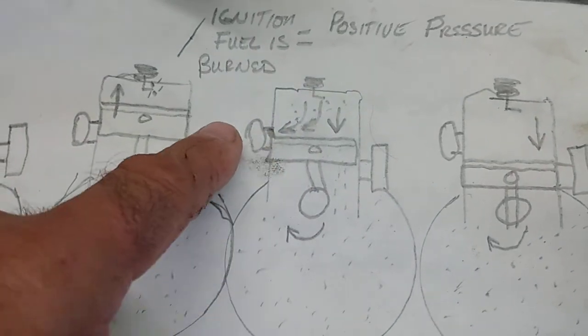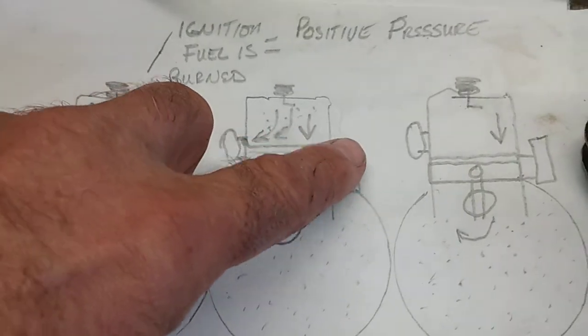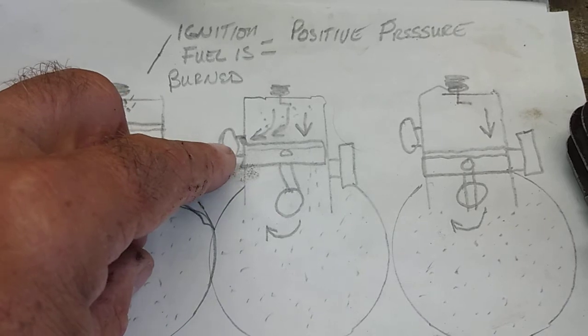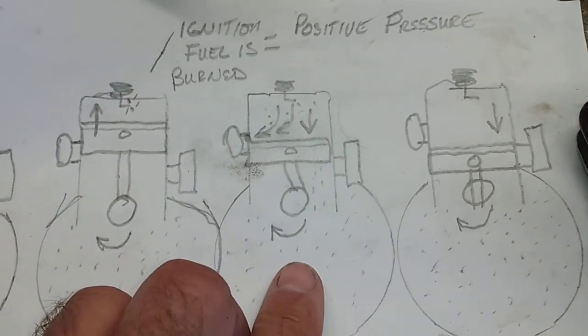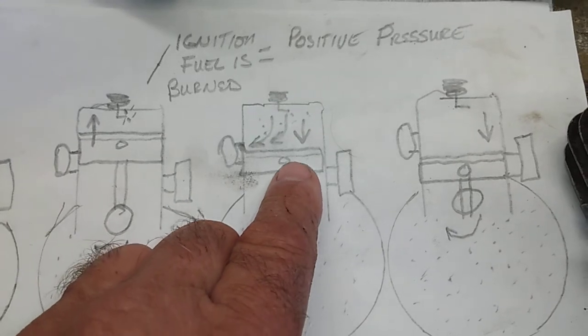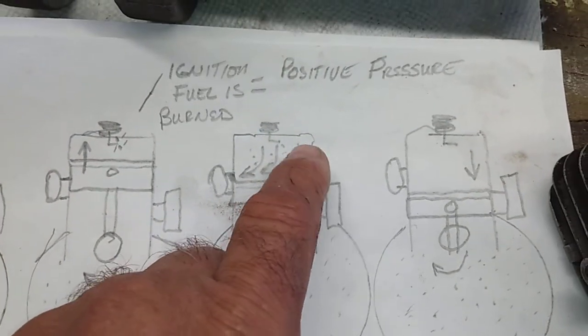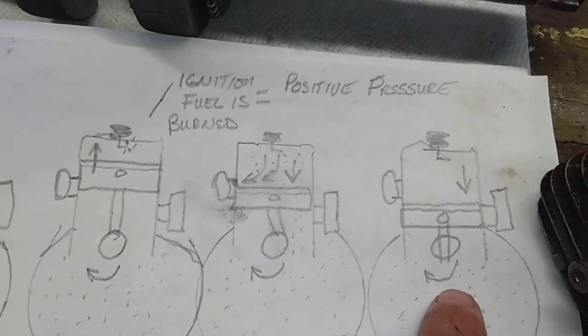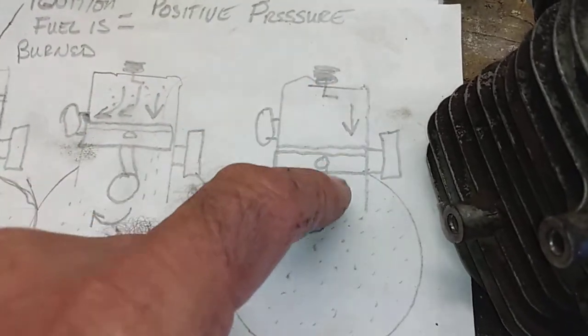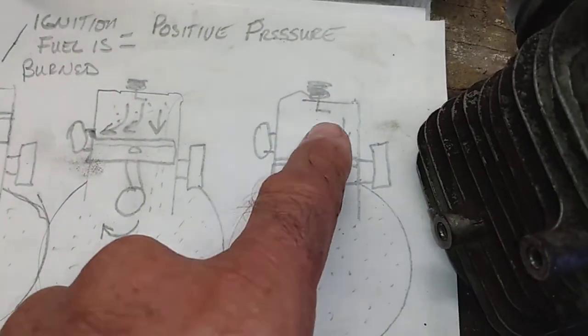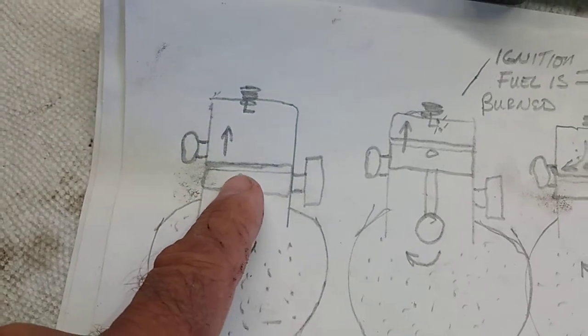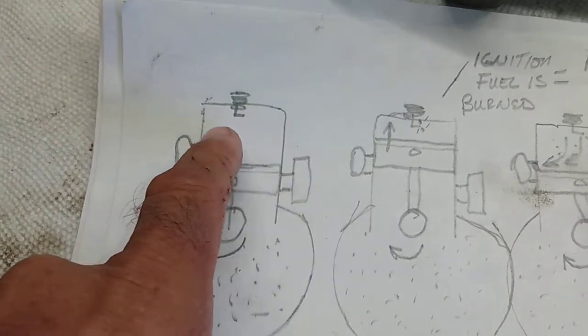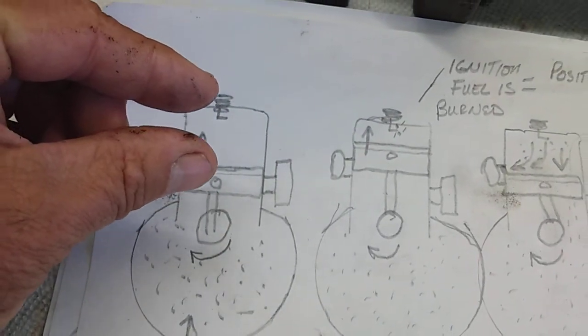So it goes out the exhaust. Normal operation is that it's free and clear - there's no carbon buildup, the screen is not clogged. It's just a free flow of evacuating from the combustion chamber. It goes out the exhaust. Now the new gas is going to come in. That's called scavenging - it also helps to push out the exhaust. And then it just keeps on repeating itself.